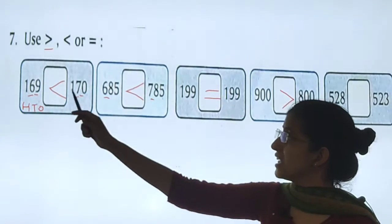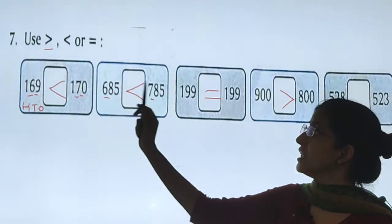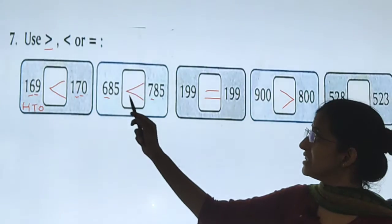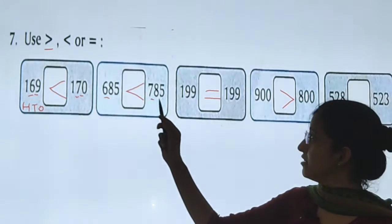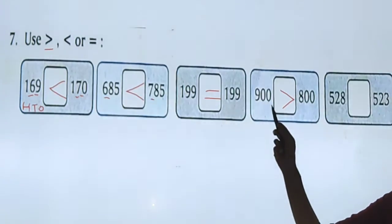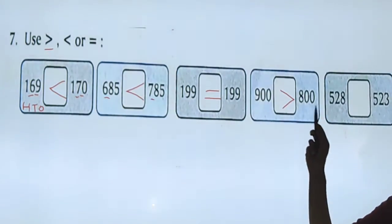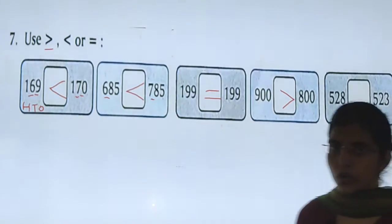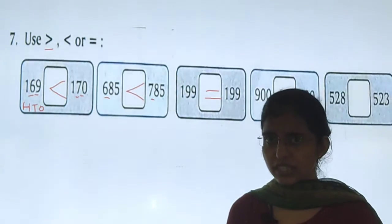169 is less than 170. 685 is less than 785. 199 is equal to 199. 900 is greater than 800. Okay kids? Clear this much?